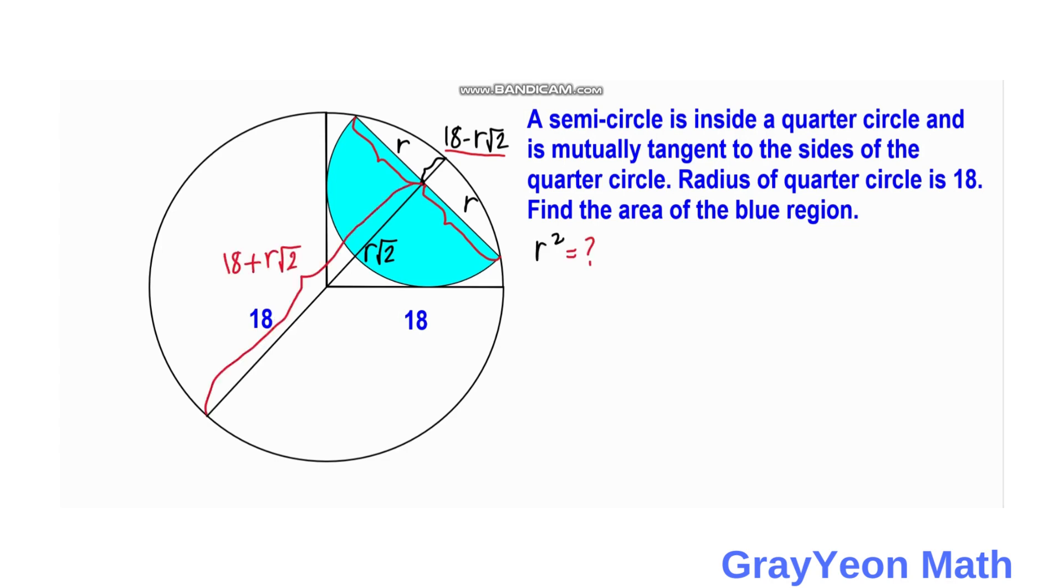So going to segments, therefore we have R square is equal to 18 minus R square root of 2 times 18 plus R square root of 2.